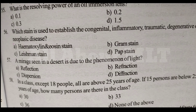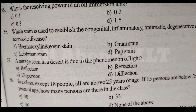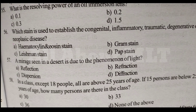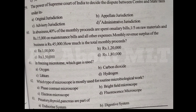In a class, except 18 people, all are above 25 years of age. If 15 persons are below 25 years of age, how many persons are there in the class? Option A 30, Option B 33, Option C 36, Option D none of the above. Answer is Option B 33.